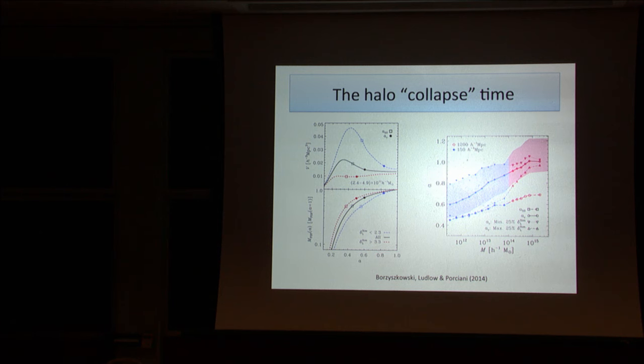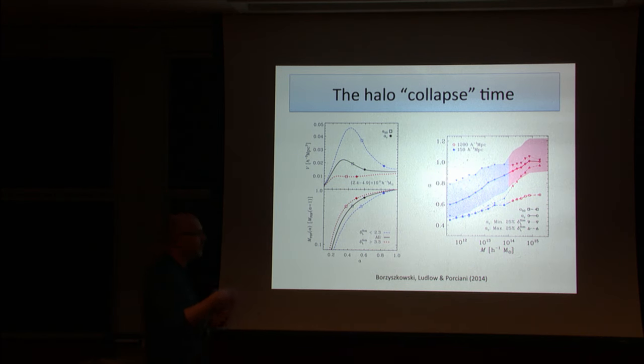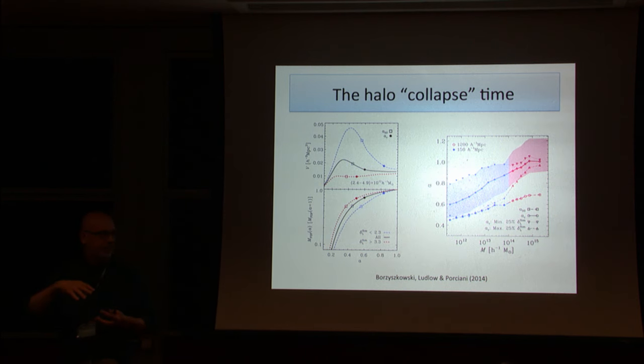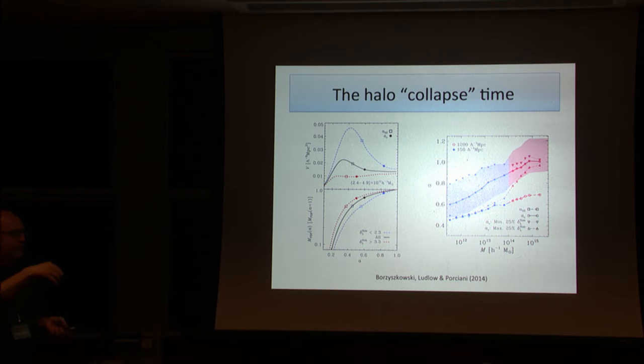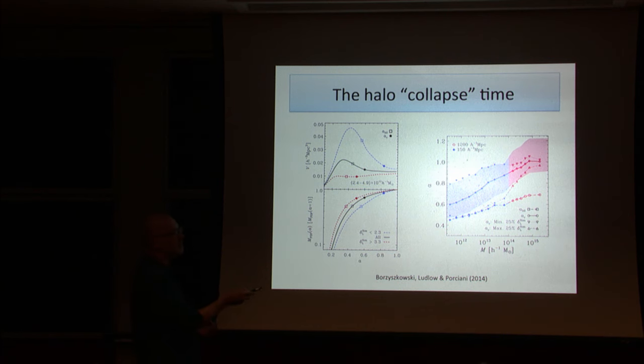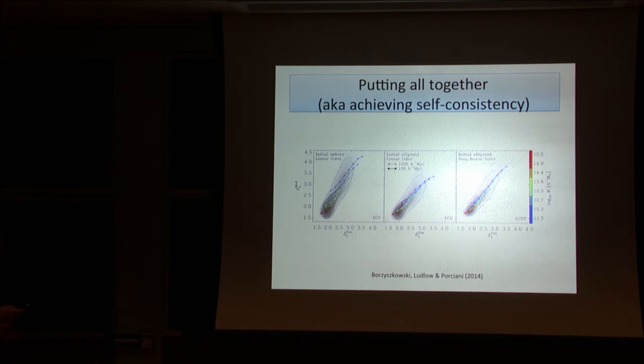So now let's repeat the game we were doing before. Let's use what I call the ellipsoidal squared collapse model—ellipsoidal collapse model that starts from ellipsoidal initial conditions that require collapse at this time, at this collapse time that I can measure for each halo in the simulation, rather than requiring the collapse to be at z=0 as is normally done. And in this case, the agreement between the model and the simulation is basically perfect.